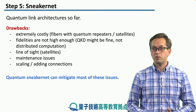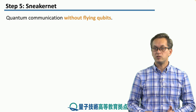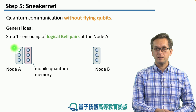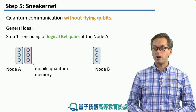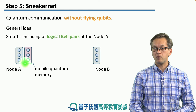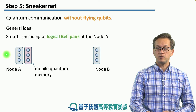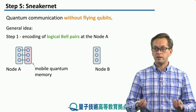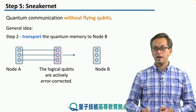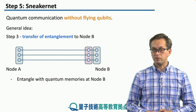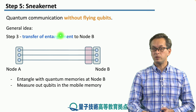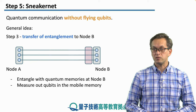Quantum Sneakernet addresses most of these drawbacks. It doesn't use any flying qubits — it only uses stationary qubits. We start with a node A that has some quantum memories and it interfaces with a mobile quantum memory unit. This mobile quantum memory unit is capable of quantum error correction and has a large number of quantum memories. Node A and the mobile quantum memory unit create entangled pairs, and then the mobile quantum unit takes its half of the entangled pairs and transports it all the way to node B, where it interfaces with node B and the qubits inside the memory are then measured out. This sets up entanglement between node A and node B without the use of flying qubits in the form of single photons.